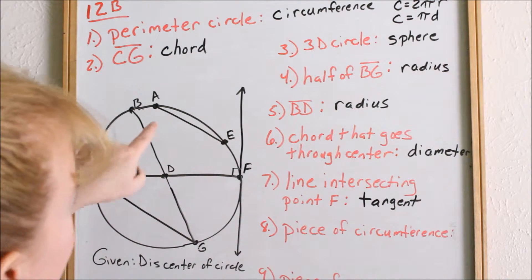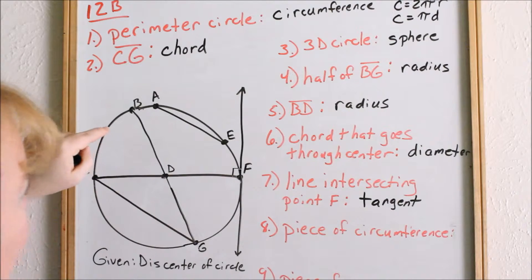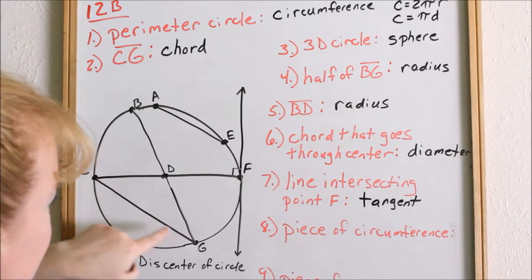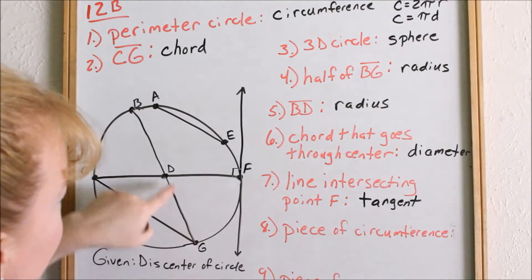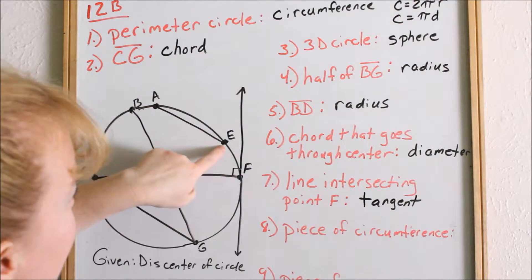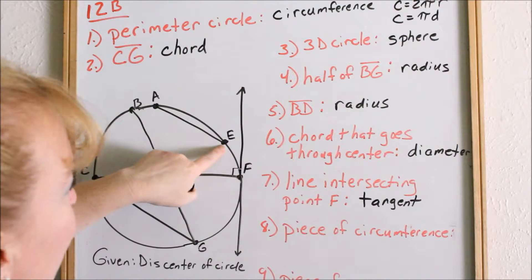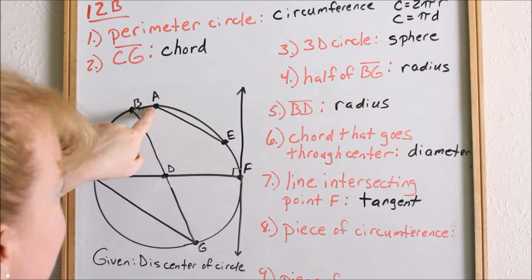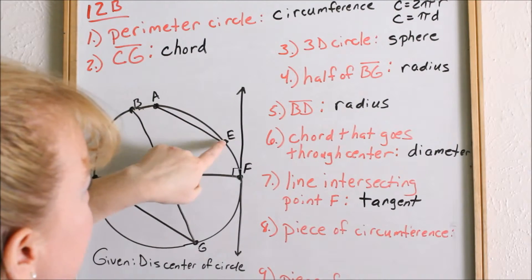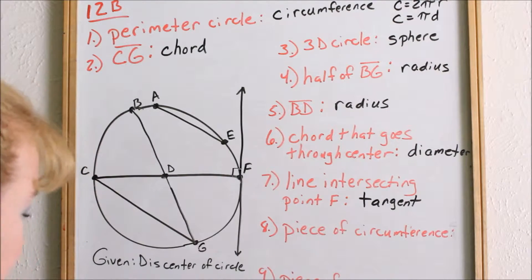Let me point out another chord in our picture. We talked about line segment CG being a chord. Line segment AE is also a chord. A chord is just a line segment that touches two points on the circumference.